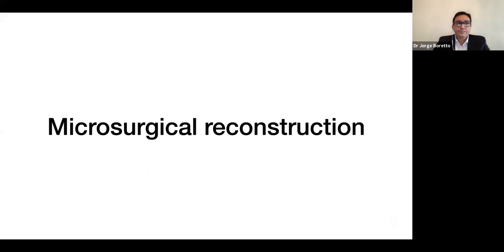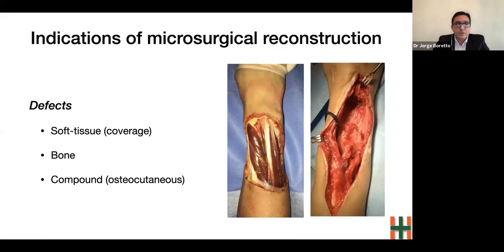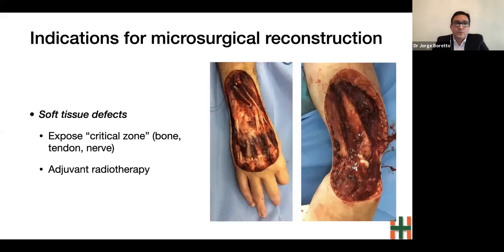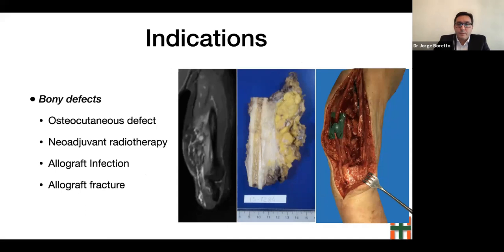So what are the indications for microsurgical reconstruction after tumor resection? In our department of orthopedics, the main indications of microsurgical reconstruction in oncological patients are soft tissue defects, bony defects, or compound defects — mainly osteocutaneous. Regarding soft tissue defects, the indications are related to exposed critical zones — meaning bone, tendon, or nerve — as well as patients who will undergo adjuvant radiotherapy, in order to avoid radiotherapy over an unstable scar. Microsurgical reconstruction of bony defects is limited to osteocutaneous defects, allograft complications such as infection or fracture, and defects following neoadjuvant radiotherapy.